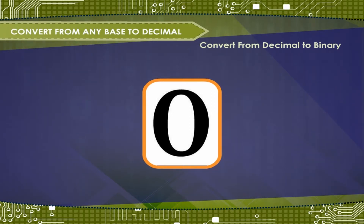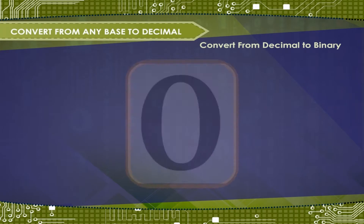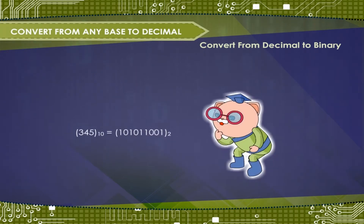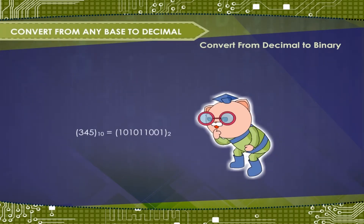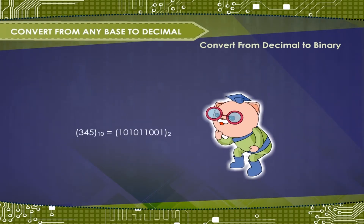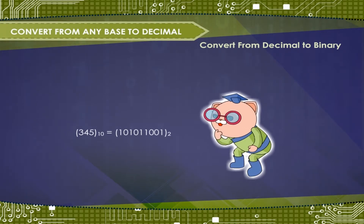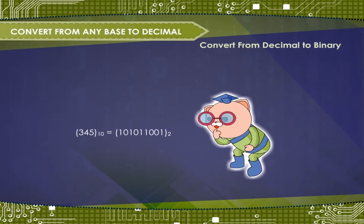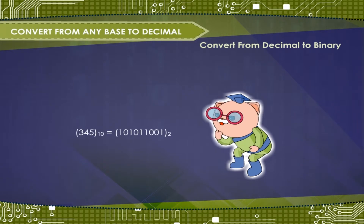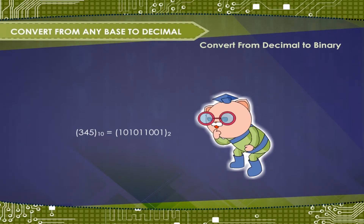So the answer is 345 base 10 is equal to 101011001 base 2.